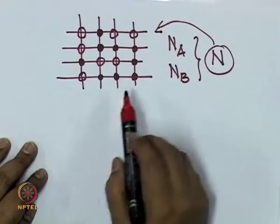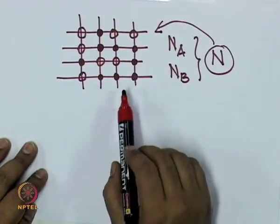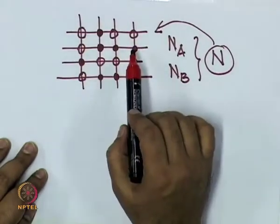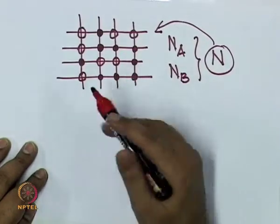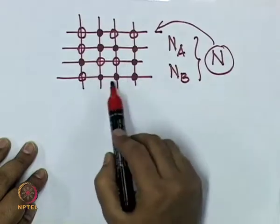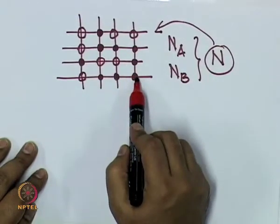We derived an expression under certain approximations. The approximation was that atoms are distributed randomly on this lattice, which was used to calculate the configurational entropy. We said that configurational entropy is the only entropy contribution, and that bond energies associated with BB bonds, AA bonds, and AB bonds are different.